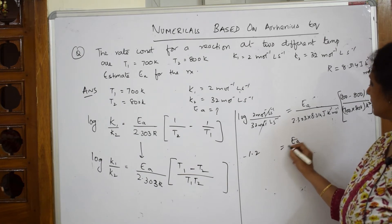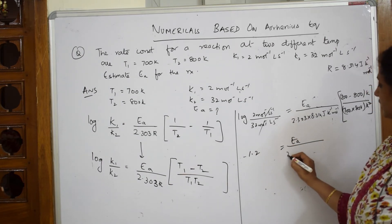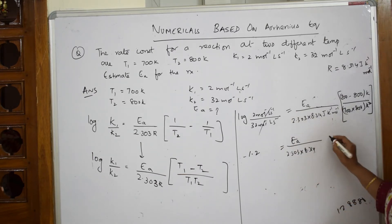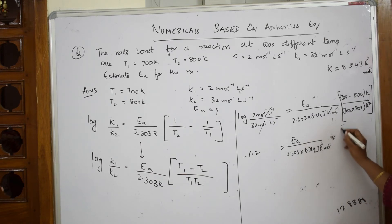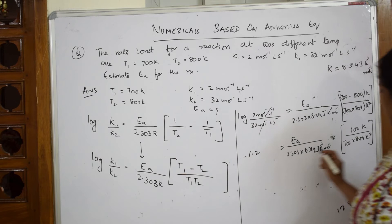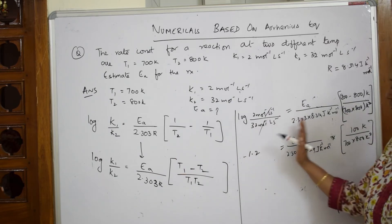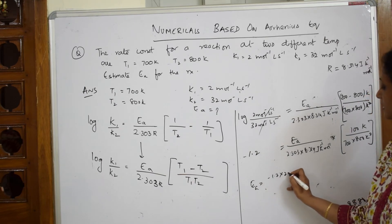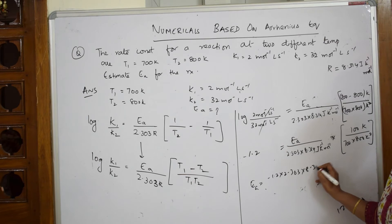The mole and mole units cancel. To find Ea, multiply: minus 1.2 into 2.303 into 8.314 Joule Kelvin into the temperature factor. After solving, I have Joule, Kelvin inverse, and mole inverse remaining as units.